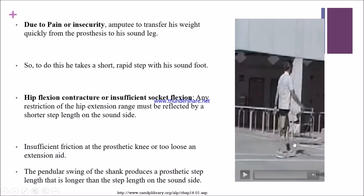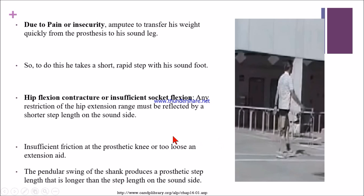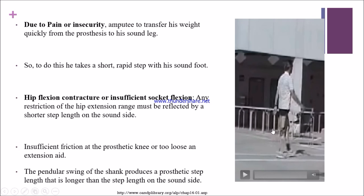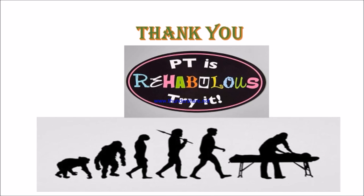If the patient has insufficient knee friction at the prosthetic side or a loose extension aid, this is also responsible for unequal step length. If the pendular swing of the shank produces a prosthetic step length longer than the step length on the sound side, the prosthetic step length becomes unequal.